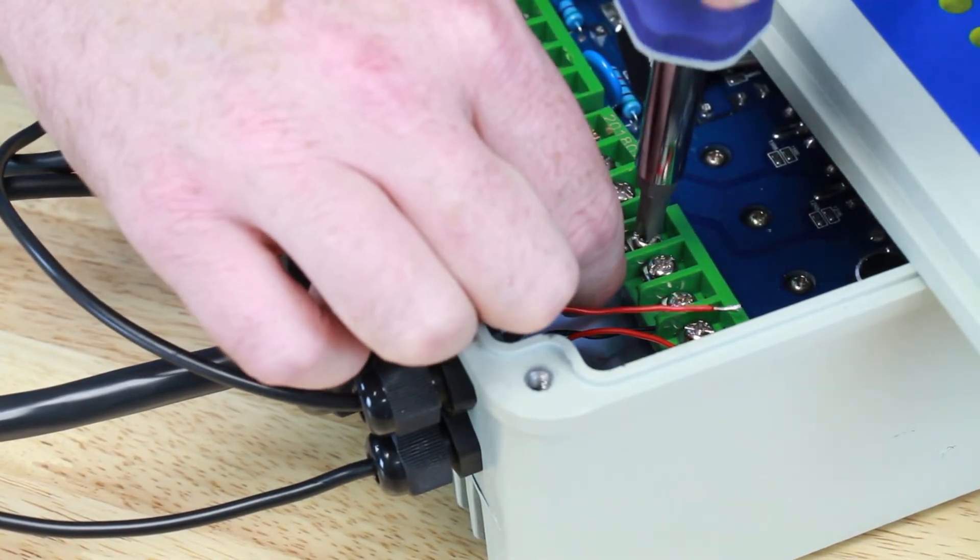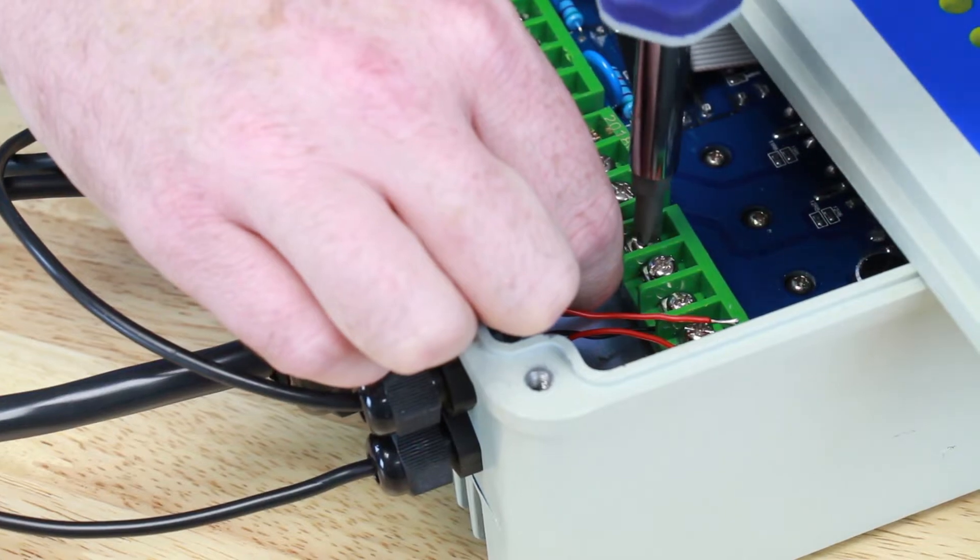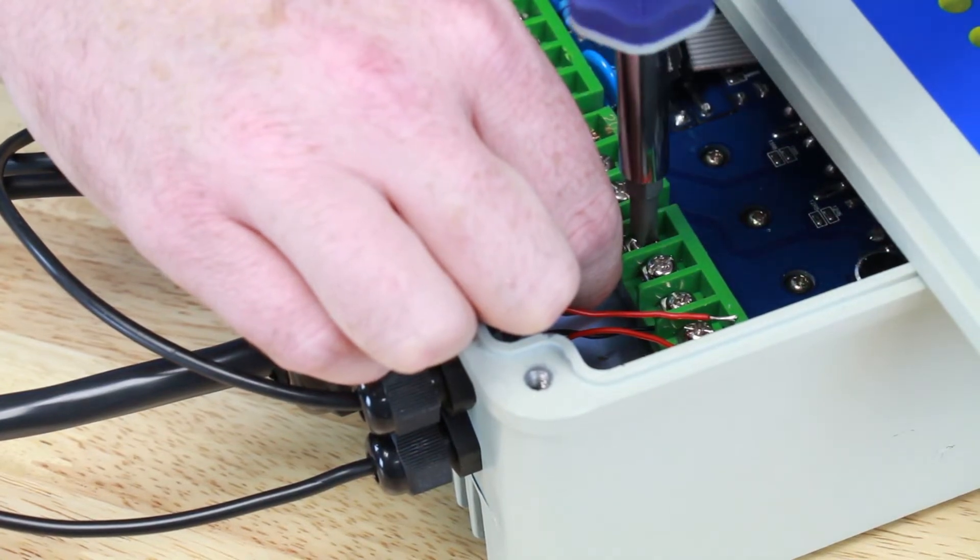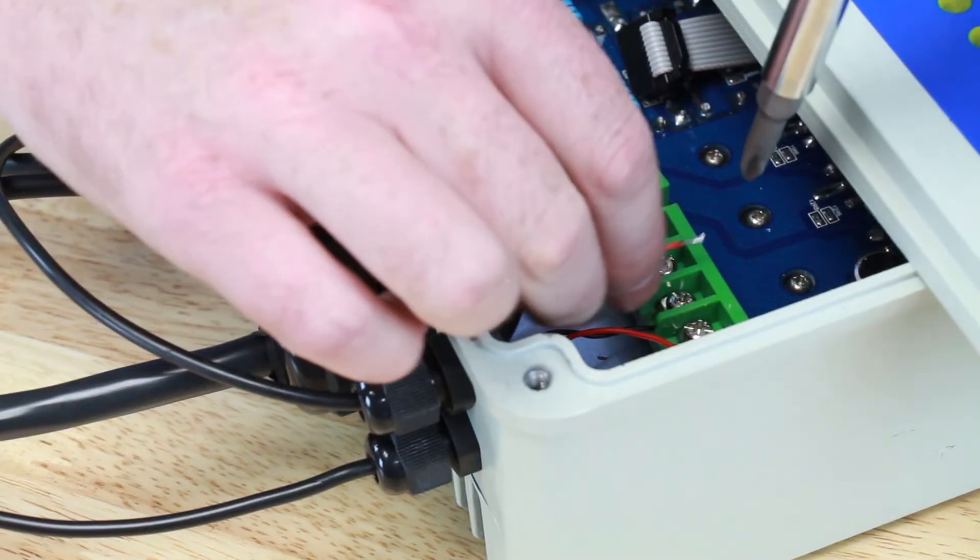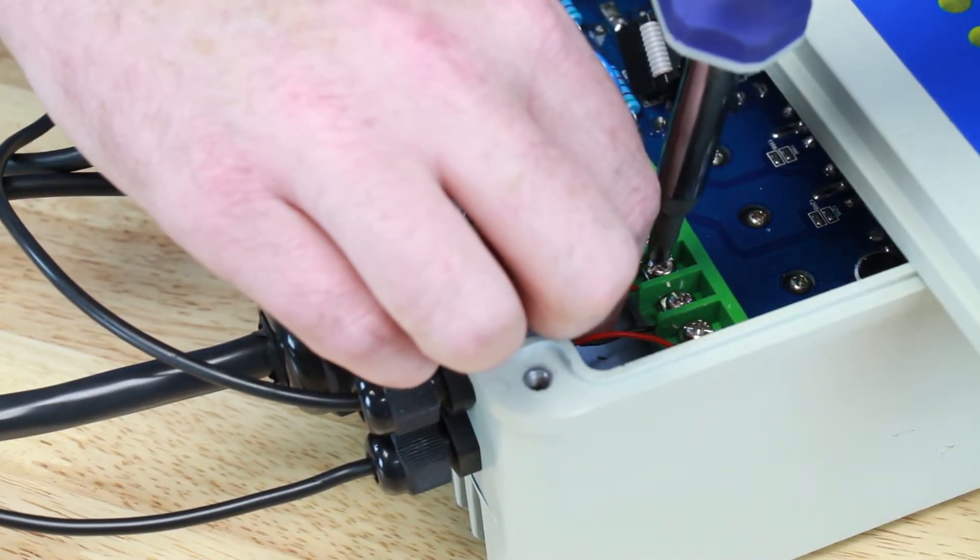Hook up the black wire to common and the red one to TH. That stands for tank high.